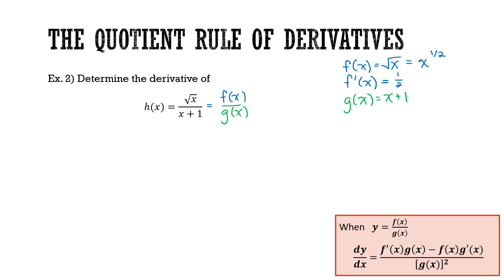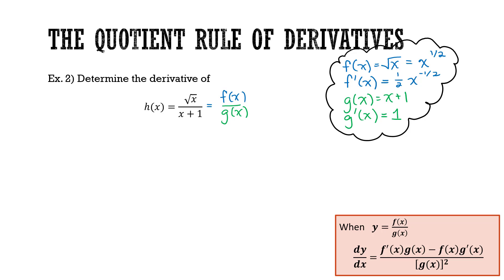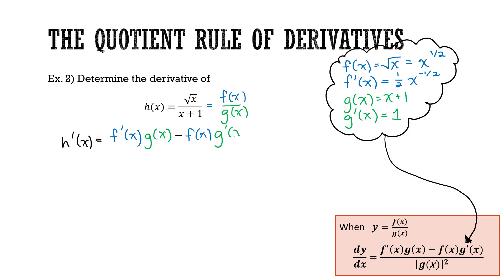F prime of x is going to be half times x to the power of half minus 1, which is negative half. Next I determine g prime of x, which I'll also need for the quotient rule. The derivative of g of x is the derivative of x, which is 1, plus the derivative of 1, which is 0 — so g prime of x is just 1. Now I take f of x, g of x, and their associated derivatives and substitute them into the quotient rule to find h prime of x: f prime of x times g of x minus f of x times g prime of x, all divided by g of x squared.